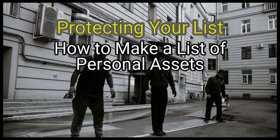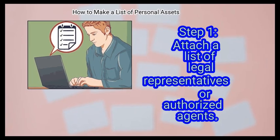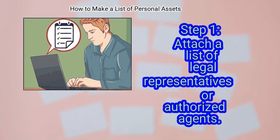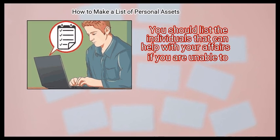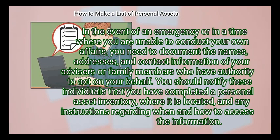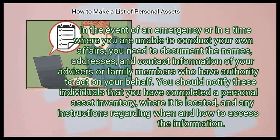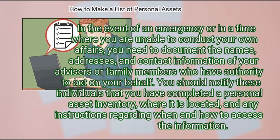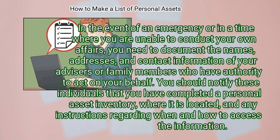Method 2: Protecting your list. The first step is to attach a list of legal representatives or authorized agents. You should list the individuals that can help with your affairs if you are unable to. In the event of an emergency or when you are unable to conduct your own affairs, you need to document the names, addresses, and contact information of your advisors or family members who have authority to act on your behalf. You should notify these individuals where the inventory is located and any instructions regarding when and how to access the information.